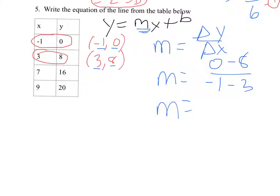So when I simplify this, 0 minus 8 is negative 8. My signs are the same here, so I have a negative 1 and a negative 3. That's going to give me a negative 4. And when I reduce that, it's going to be a positive 2 because negative 4 can go into negative 8 two times. So now I have my m.